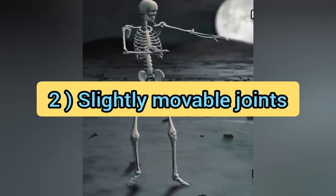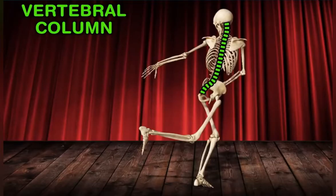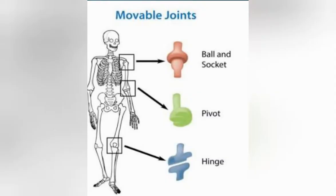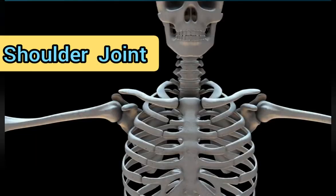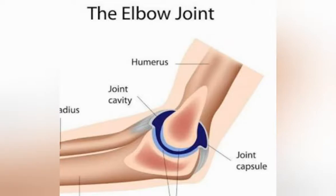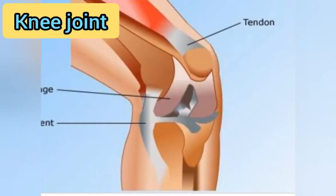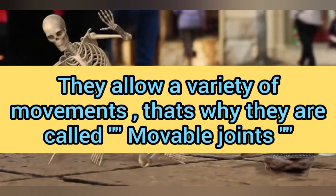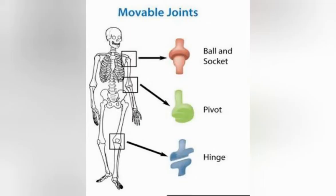Slightly movable joints move slightly and take part in movements of the vertebra, like in bending. Movable joints — for example, the shoulder joint, hip joint, elbow joint, and knee joint — allow a variety of movements. That's why they are known as movable joints, and there are different types of movable joints inside the body.